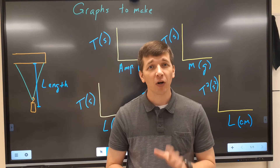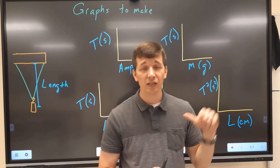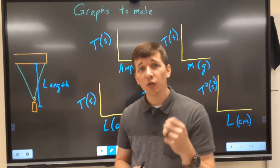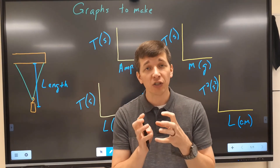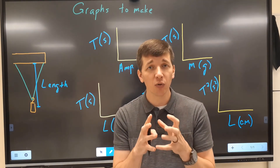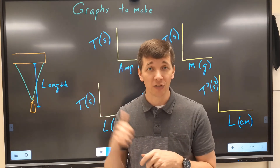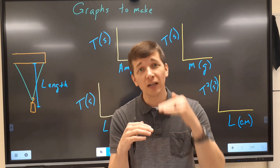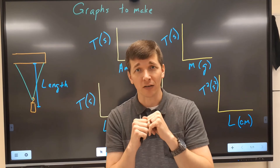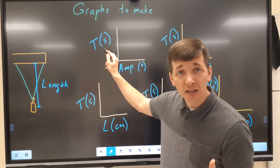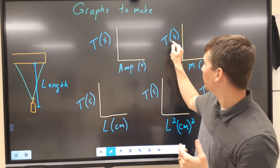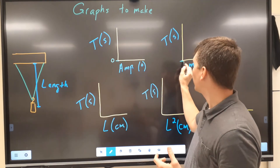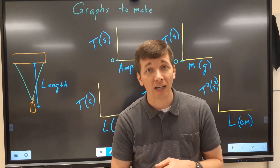That does it for the experiment part, but a quick pointer on making your graphs. We discussed at the beginning you have five graphs you need to make as you analyze this data. When you're doing your graphs, you want to make sure your origin shows up at 0, 0. That's the only way you're truly going to see the relationship between these variables. If your graph is zoomed too far in, you might think there's a slope when really, zoomed far out, you would have a horizontal line. So be careful, especially when looking at period versus amplitude and period versus mass, to make sure the origin is set at 0 — especially on the y-axis.